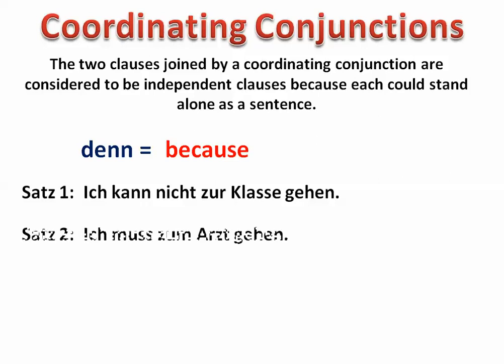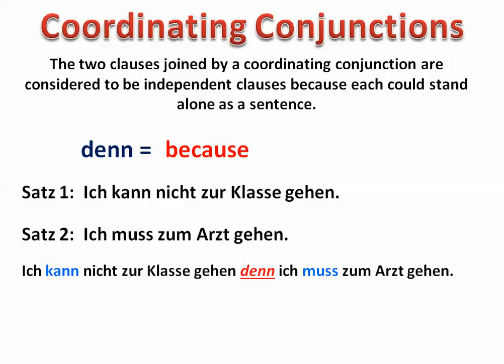We are going to combine two sentences. Sentence one: 'Ich kann nicht zur Klasse gehen' — I cannot go to class. And 'Ich muss zum Arzt gehen' — I have to go to the doctor. We want to say: I cannot go to class because I have to go to the doctor. Using 'denn,' the coordinating conjunction, it becomes: 'Ich kann nicht zur Klasse gehen, denn ich muss zum Arzt gehen.' You'll notice the subject and verb in both sentences have the same order — the verb is where it's supposed to be, just as if you took two independent sentences and put them together.